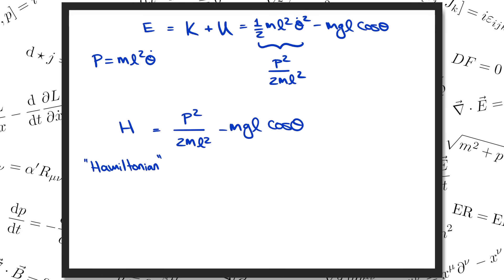Which say that theta dot equals the derivative of h with respect to p, while p dot is equal to minus the derivative of h with respect to theta. Note that whereas f equals ma and the Euler-Lagrange equation gave us a single second order differential equation, Hamilton gives us a pair of first order equations for theta and p.